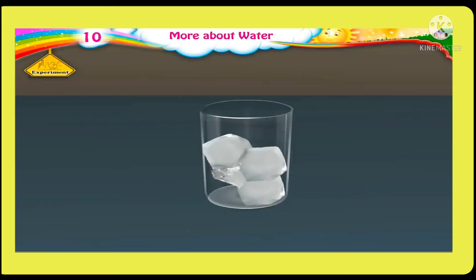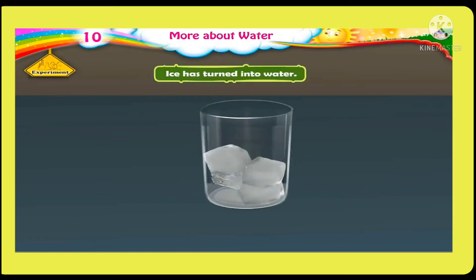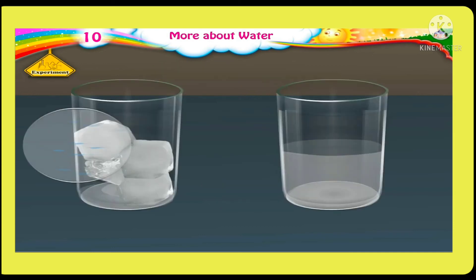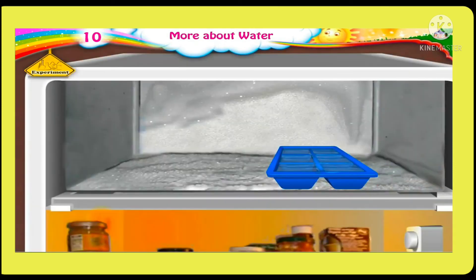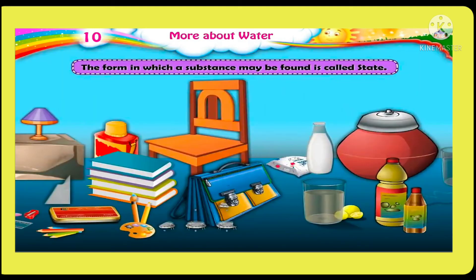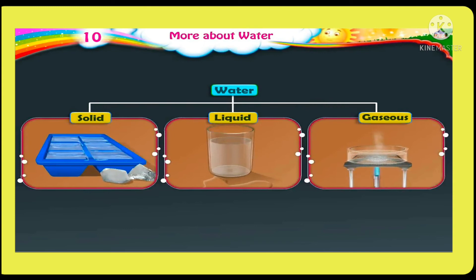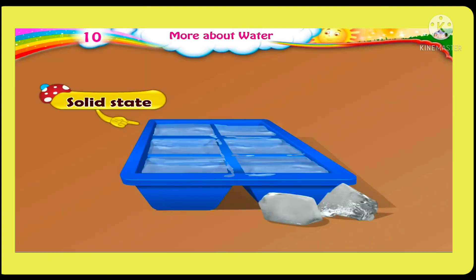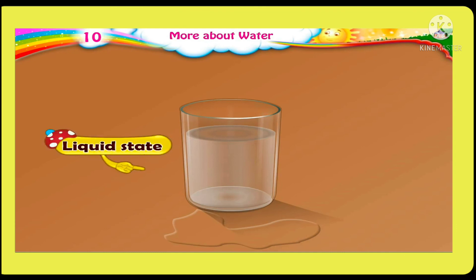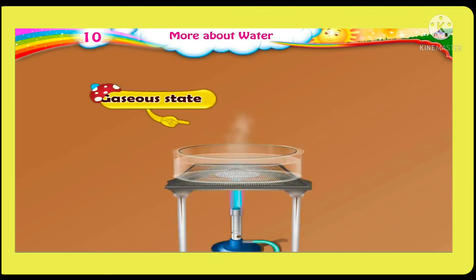Now let's take some ice cubes in a glass. After some time, we can see that the ice has turned into water. When ice is left uncovered, it starts melting due to the heat present in the air. The exact opposite happens when we cool the water — it freezes and turns into ice again. The form in which a substance may be found is called its state. Water has three states: solid, liquid, and gaseous. Ice is the solid state of water, water we use in daily life is the liquid state, and water vapour is the gaseous state of water.